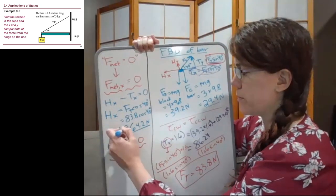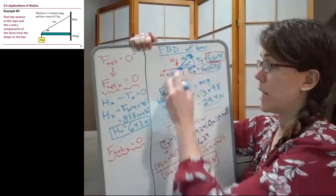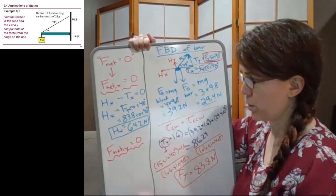So in the x direction, the hinge is applying 64.2 newtons to the left as we've drawn it to the bar.